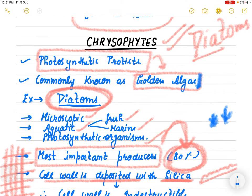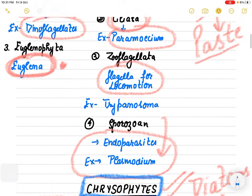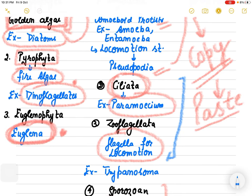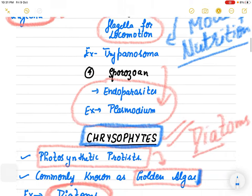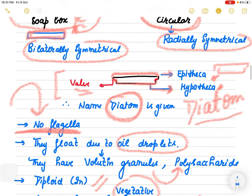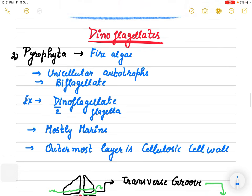This is our first Protista group - diatoms - which belong to the group known as Chrysophytes. Please mark and paste this table to solve questions related to mode of nutrition - it will help a lot. Next, we will cover dinoflagellates and euglenoids in the next lecture.